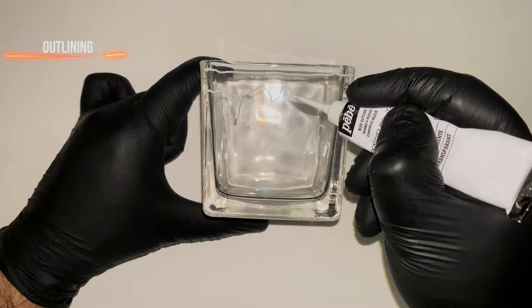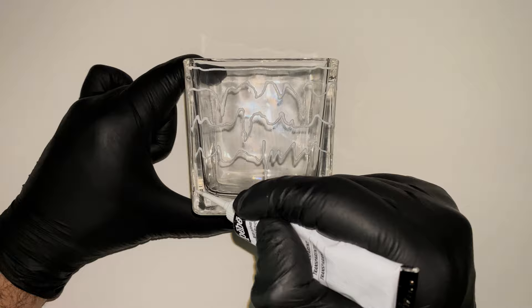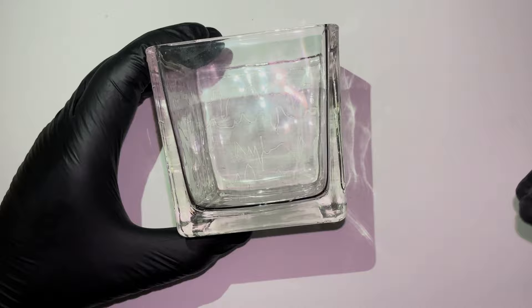Welcome to another glass painting tutorial video. Today I will paint this glass tea light holder with burgundy, yellow color and a nice texture. Watch until the end of this video to see how this creation is made.